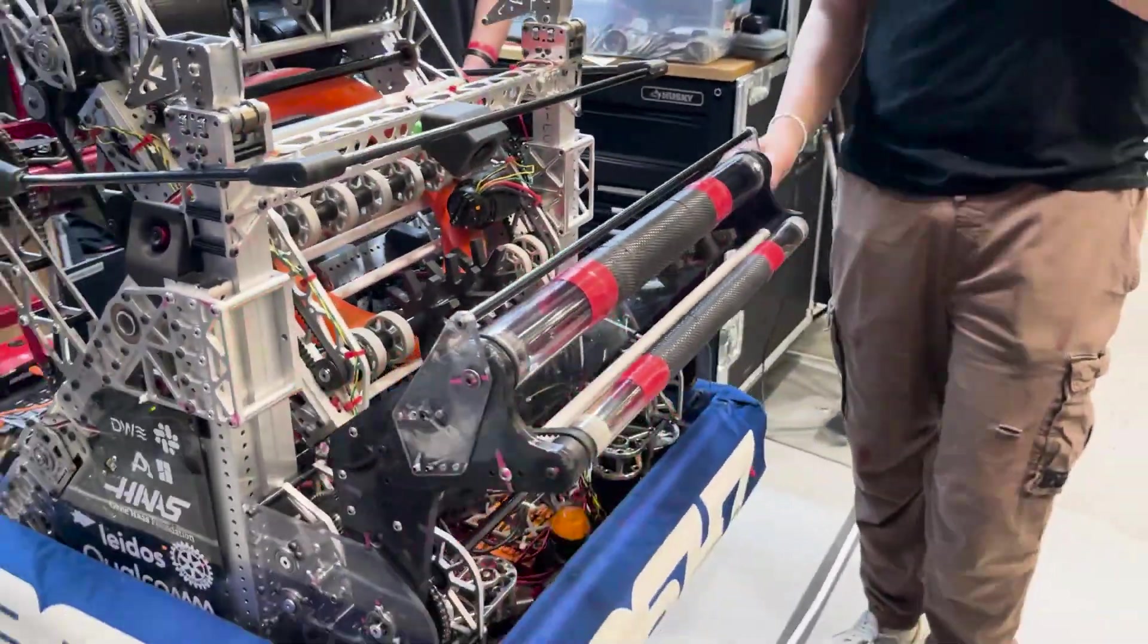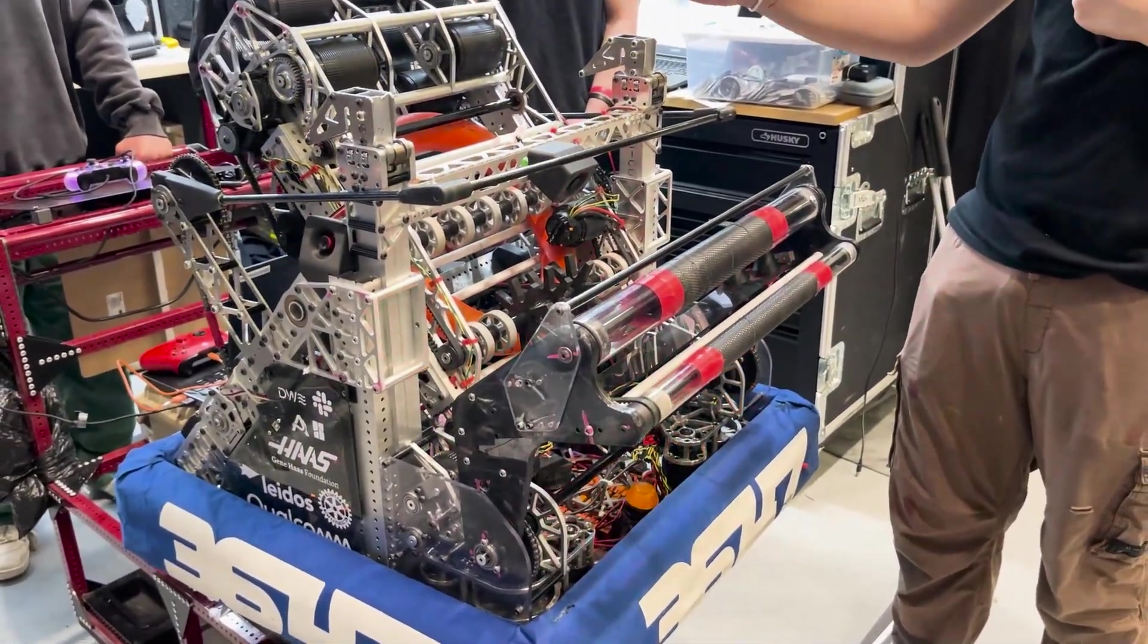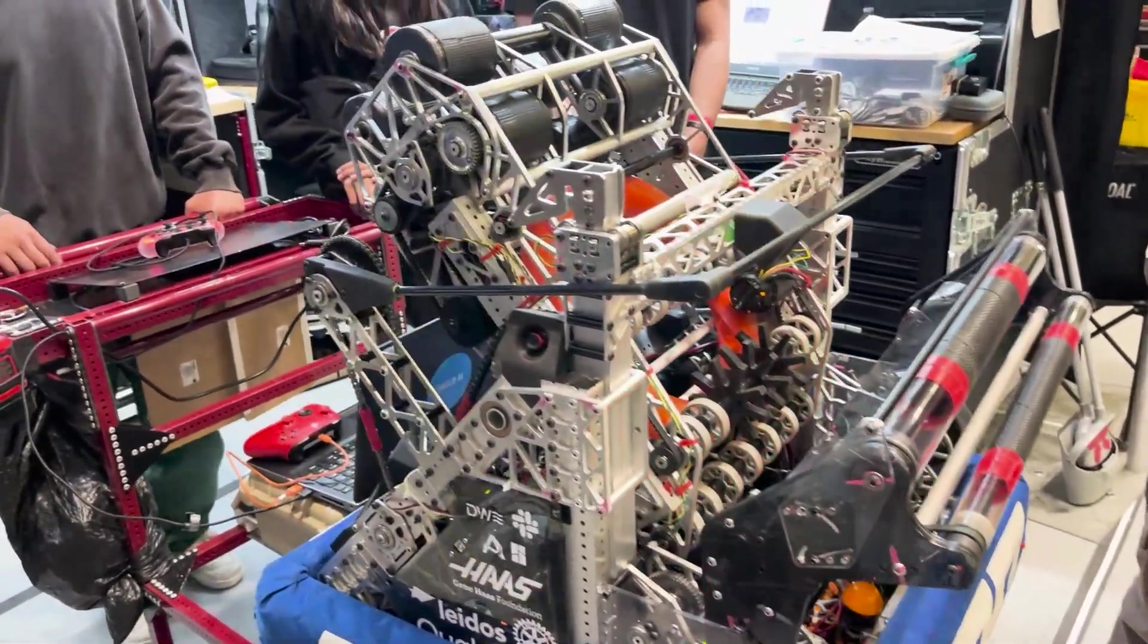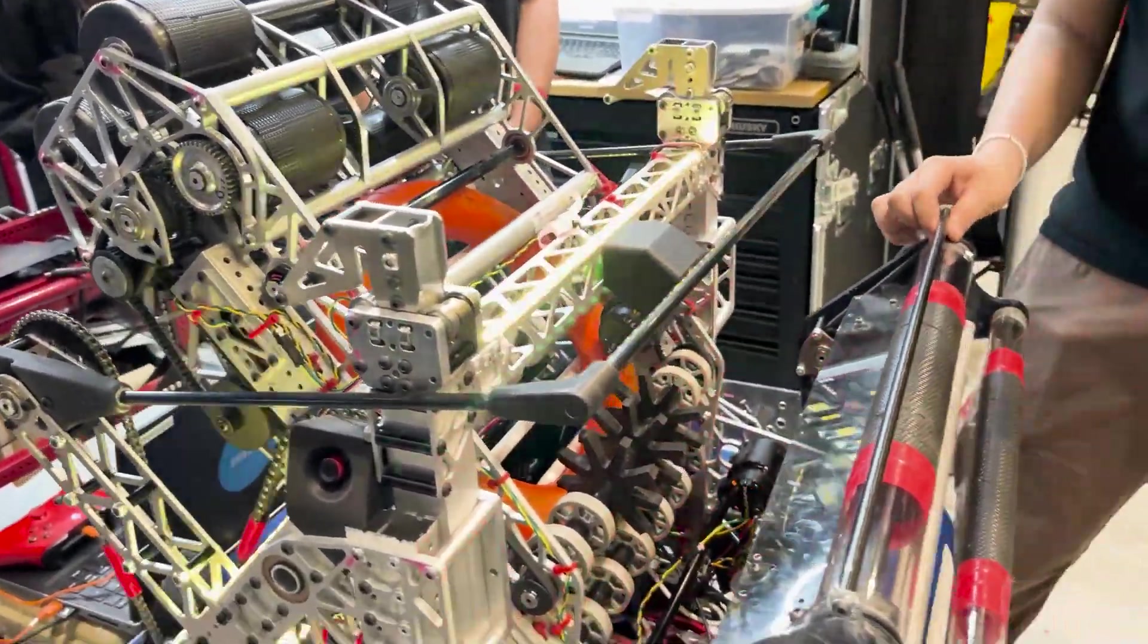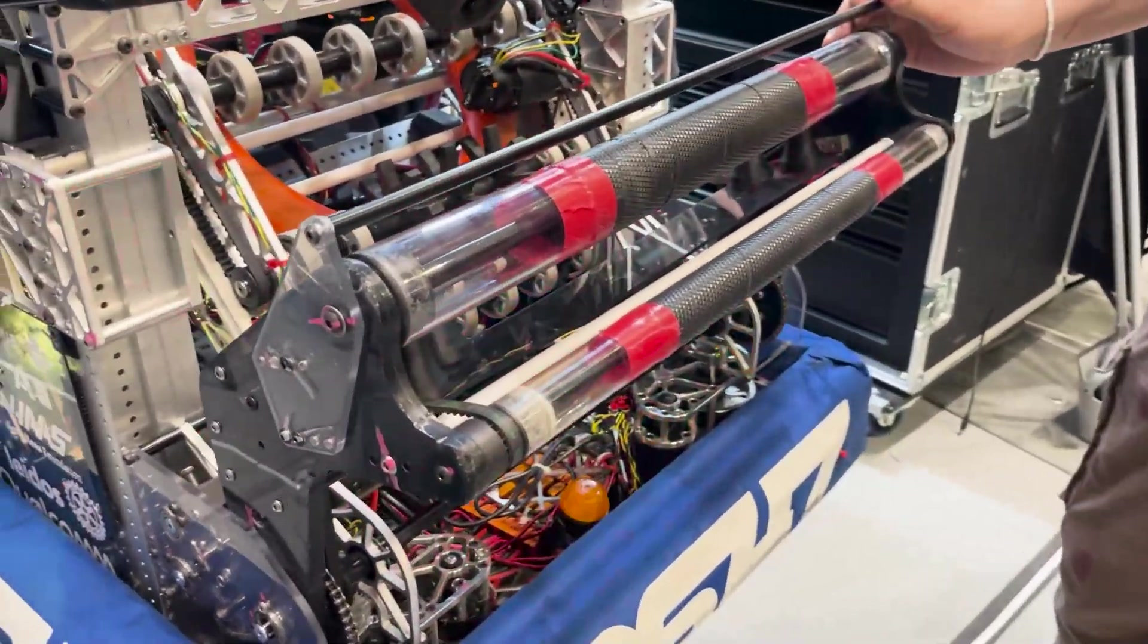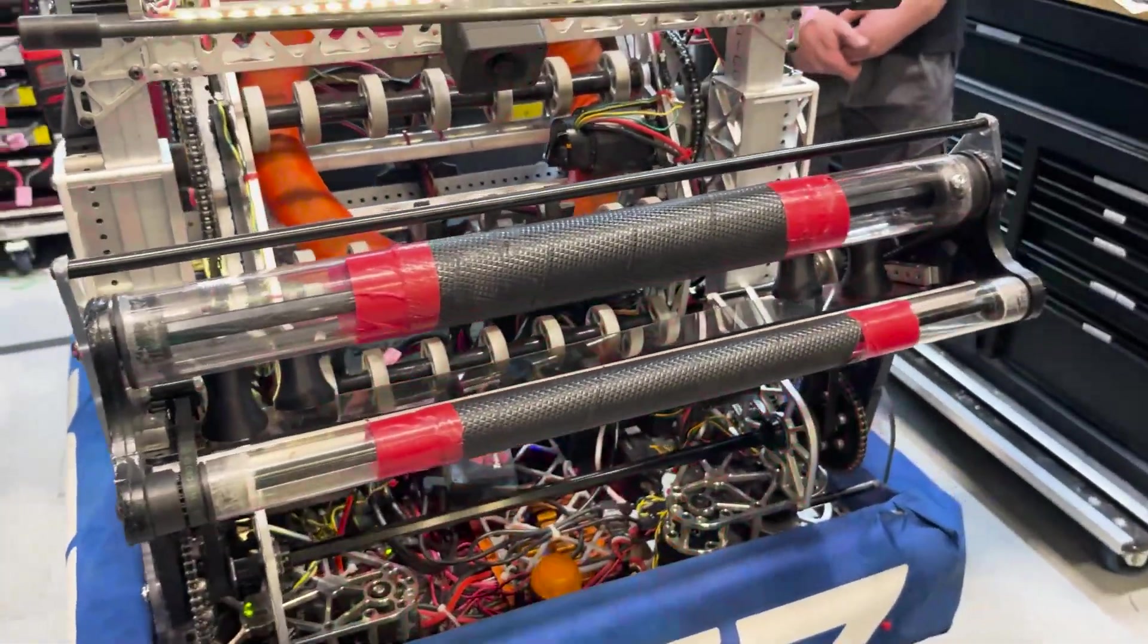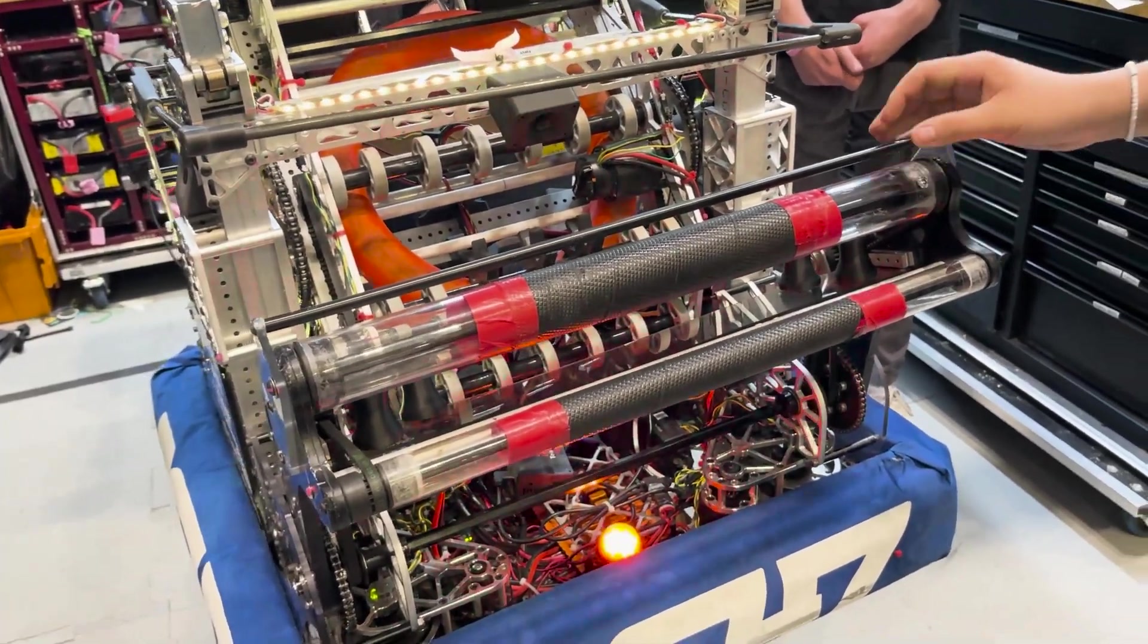With that pass through we're able to basically at any angle the shooter is at or was locked at, we can pass through from the intake over into the shooter. We chose an over the bumper intake as opposed to an under the bumper because initially on our alpha robot - this is beta by the way - we had an under the bumper that we couldn't really get to work right.